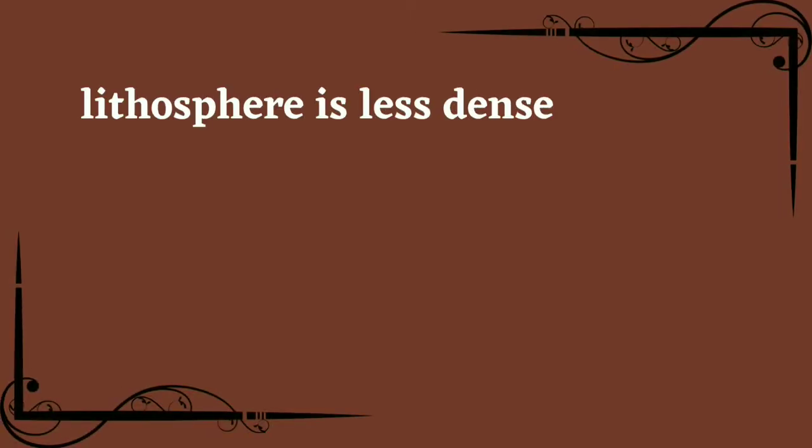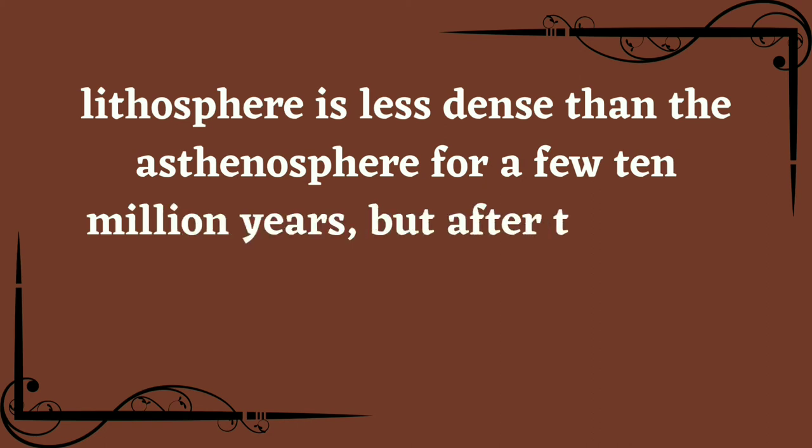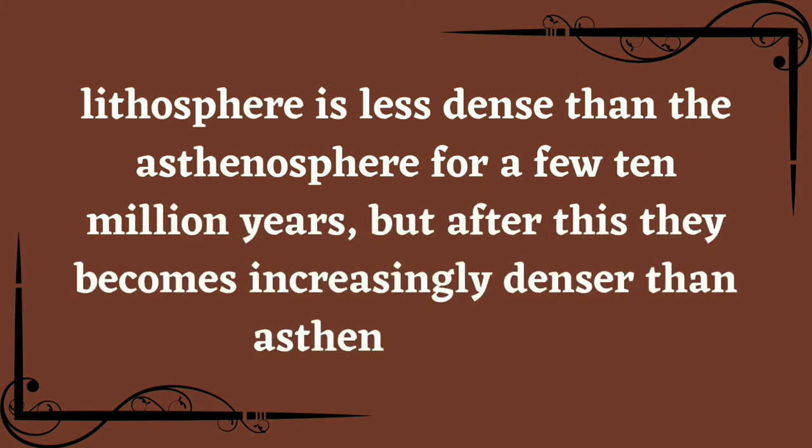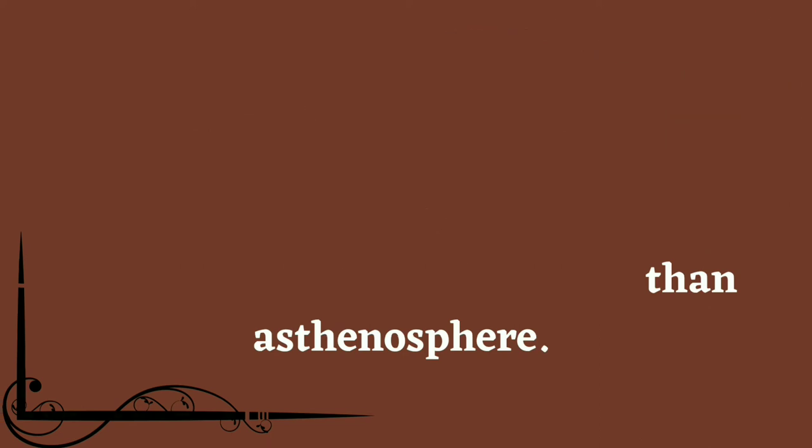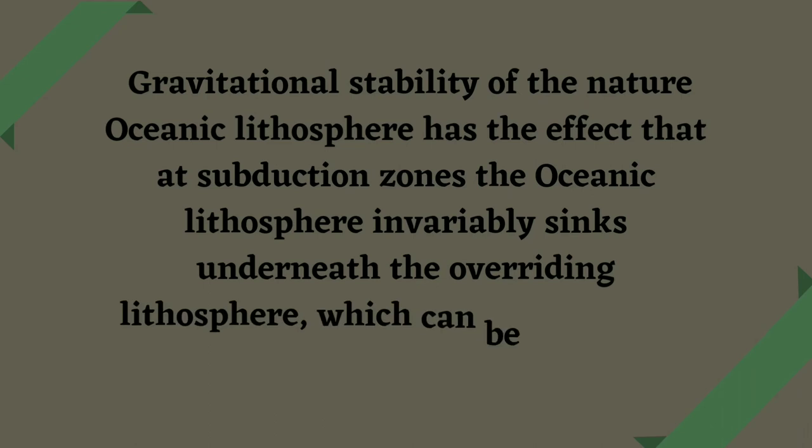The lithosphere is less dense than the asthenosphere for a few tens of millions of years. But after this, it becomes increasingly denser than the asthenosphere. The gravitational instability of mature oceanic lithosphere has the effect that at subduction zones, the oceanic lithosphere invariably sinks underneath the overriding lithosphere, which can be oceanic or continental.